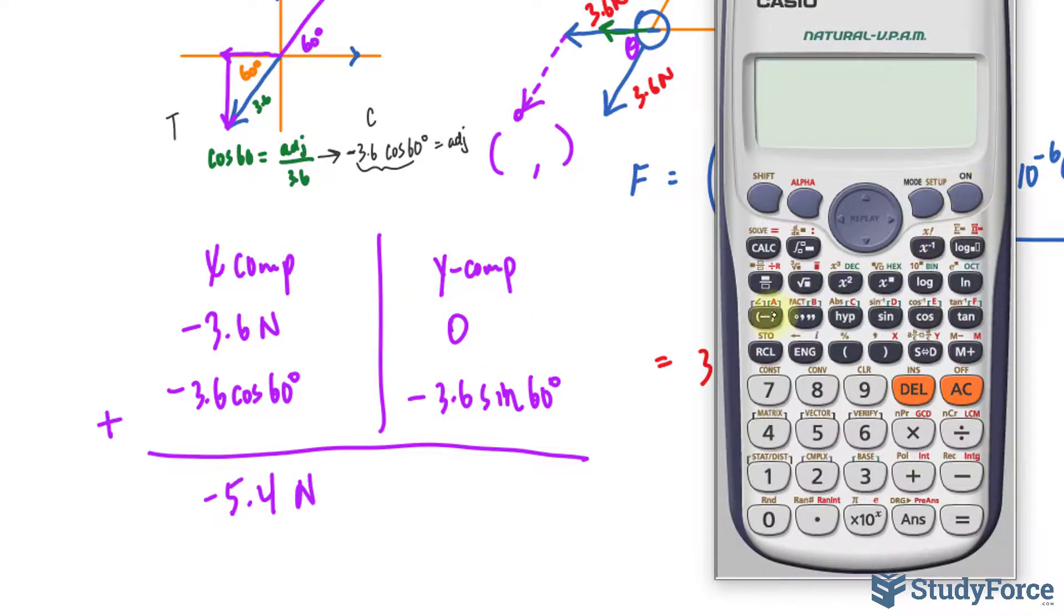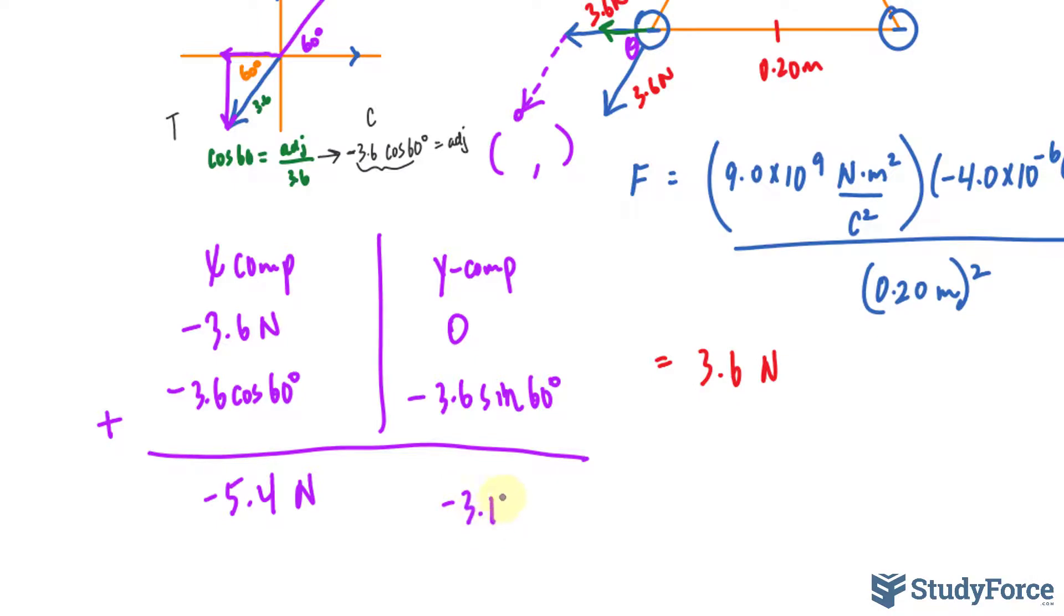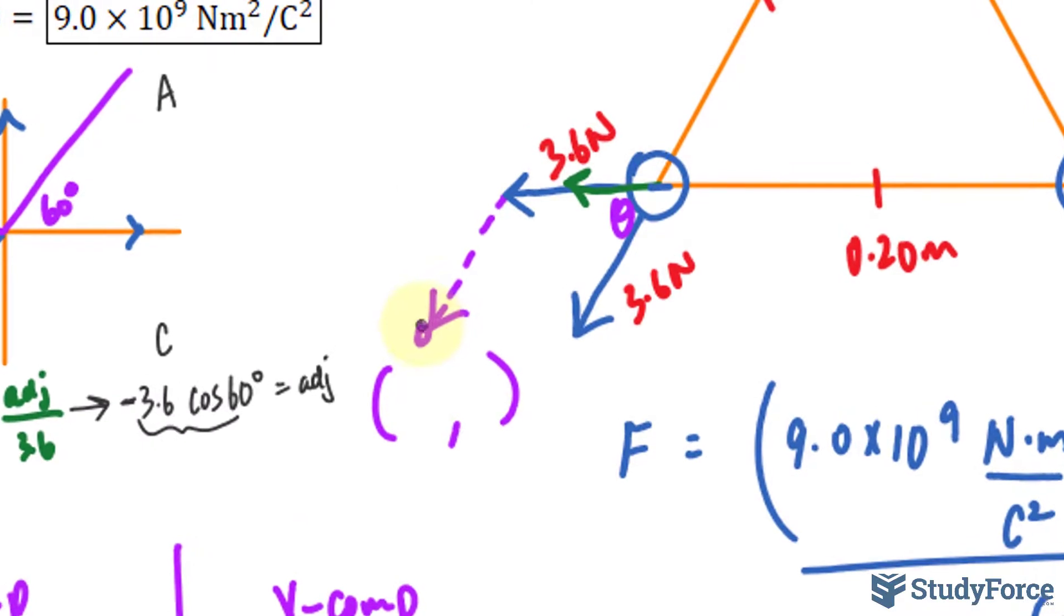And over here, we can write down negative 3.6 sine 60. And that is negative 3.117 newtons. So the coordinates of this point, of our resultant vector, will be negative 5.4 and roughly negative 3.117.